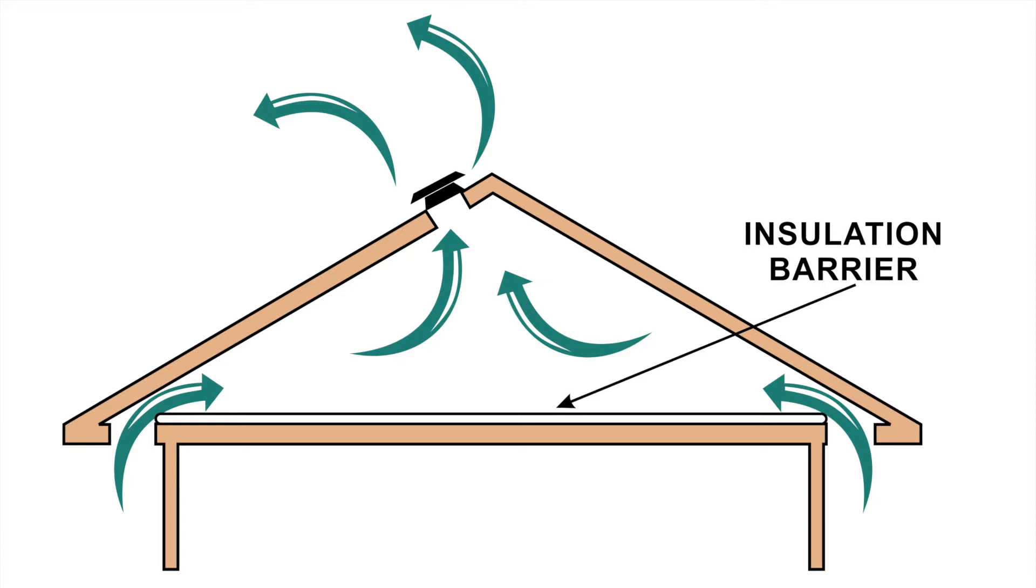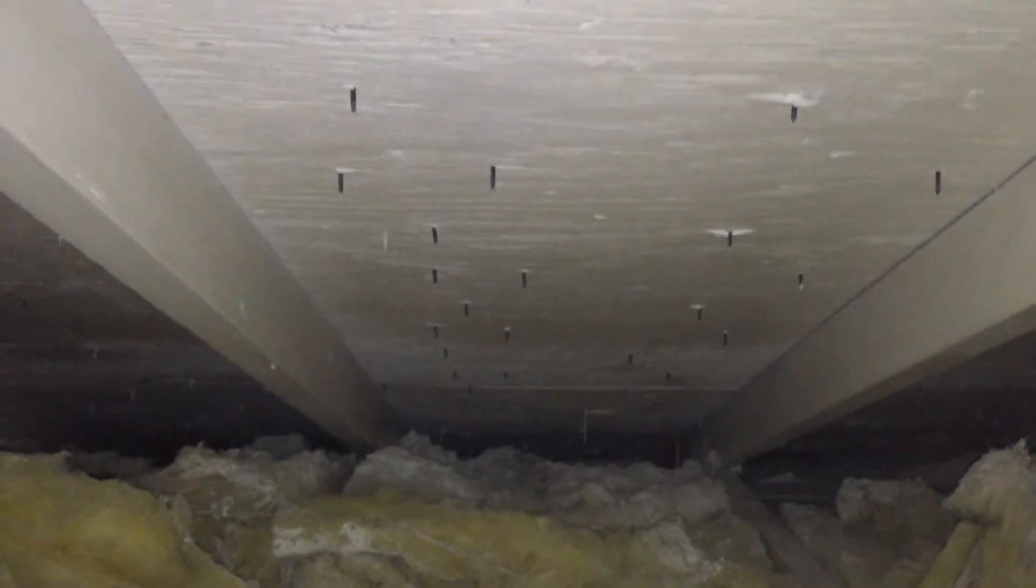You can see afterwards what we did. We came in with a biocide, which is a liquid product that kills mold. We then physically scrub down all of the surfaces of the top cord of the truss, which acts as the rafter, and also the plywood sheeting throughout the attic space.